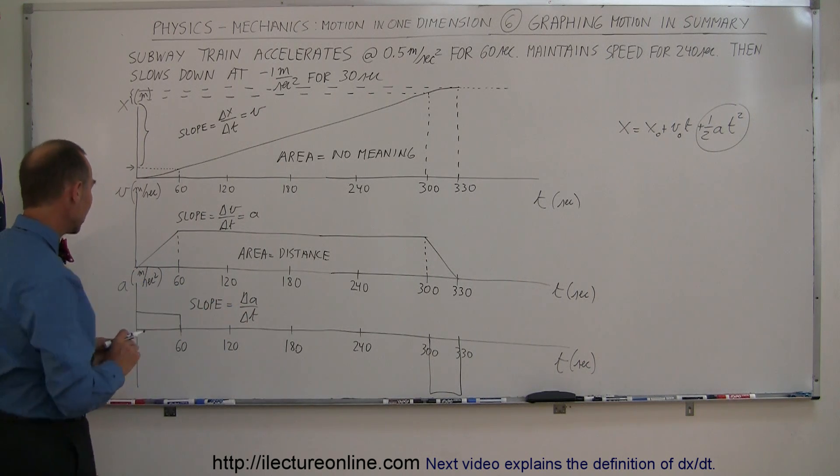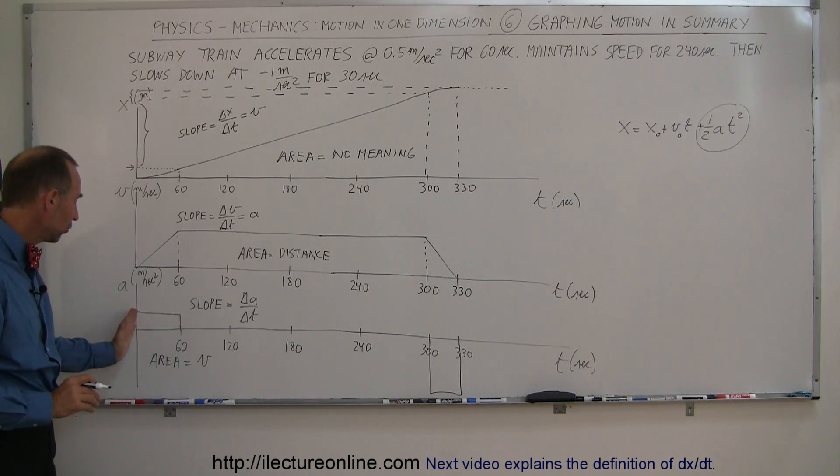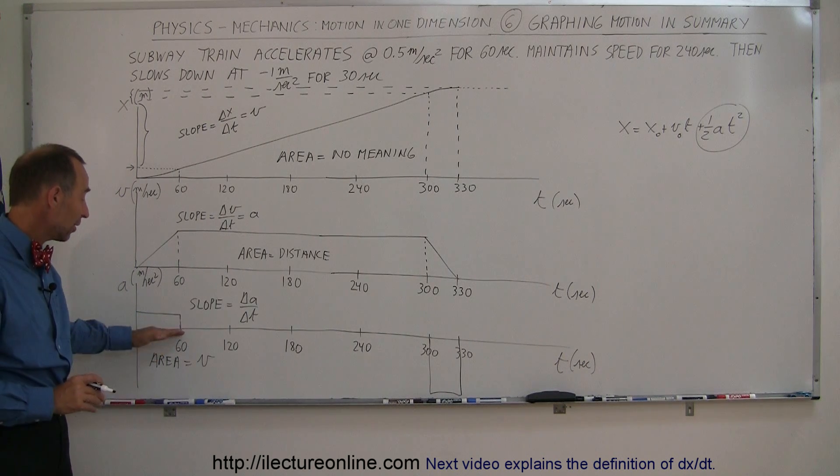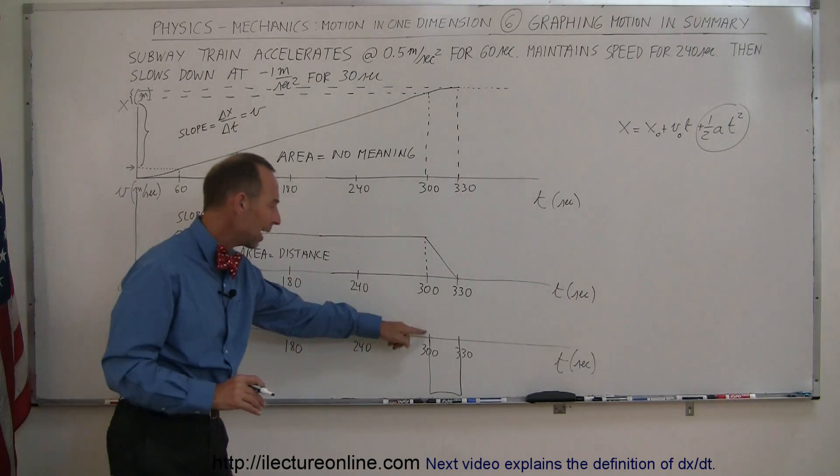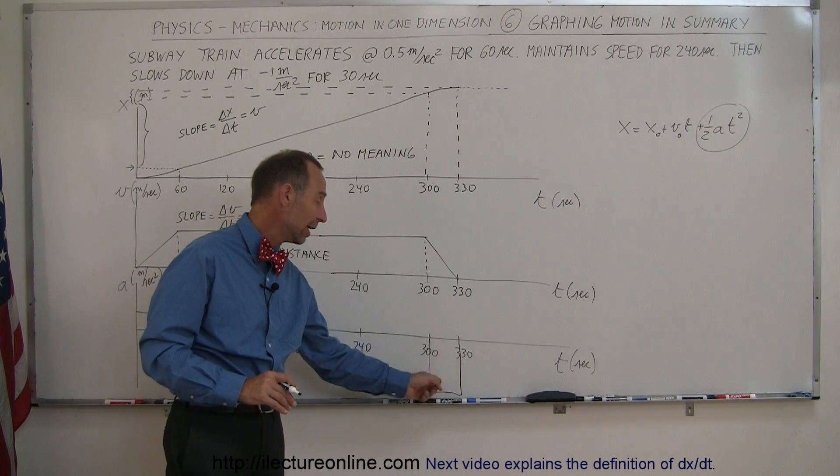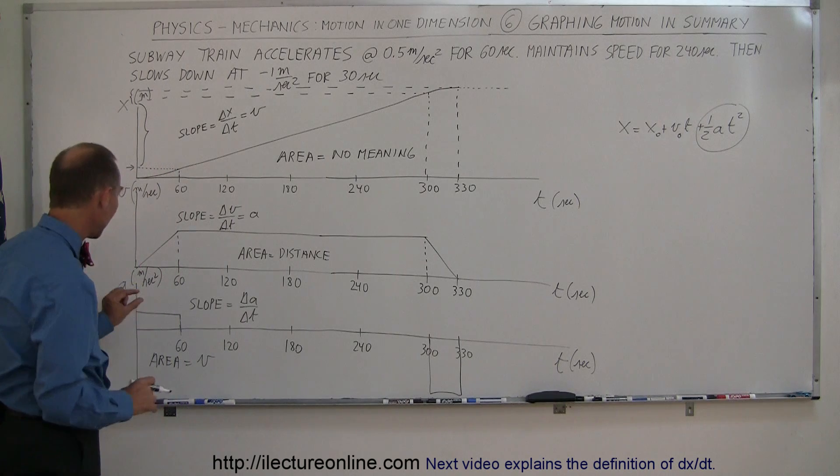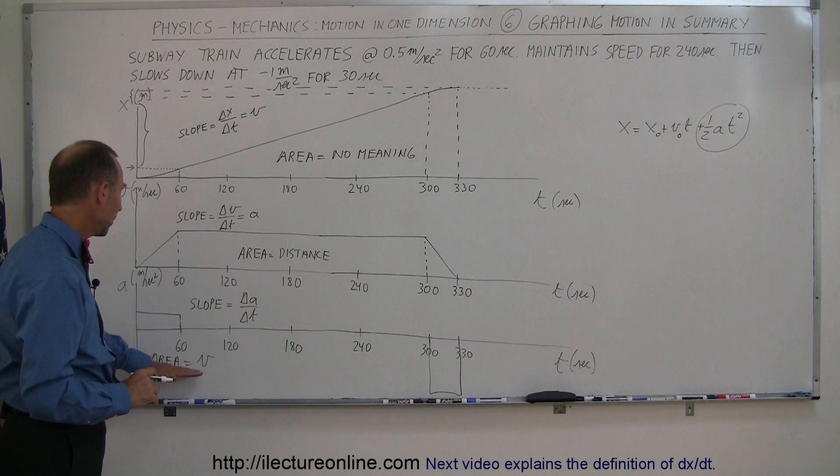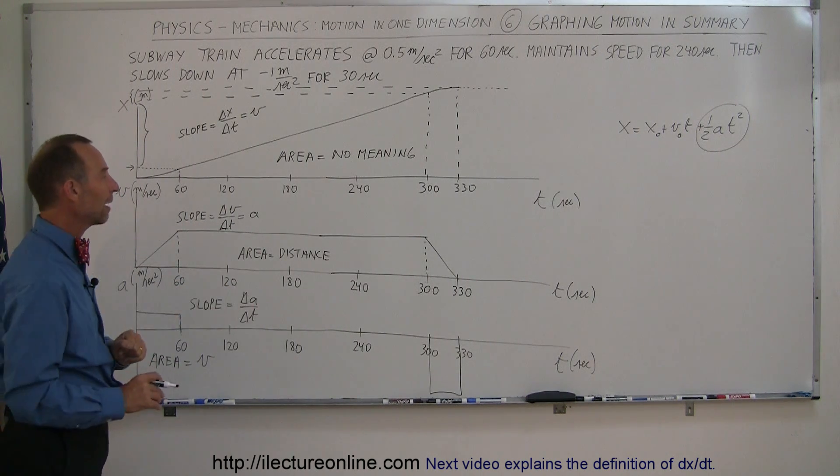The area underneath the curve represents the velocity traveled. As time goes by and there's more and more area underneath the curve, you're going faster and faster. Now you can see there's no more area right there, that means the velocity is not changing. Here the area is negative, that means the velocity is decreasing, you're losing velocity. By the time you get back to this point, this negative area cancels out this positive area and the velocity is back to zero. So the area represents velocity, the slope represents the change in acceleration over time for an acceleration versus time graph.